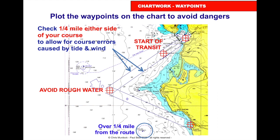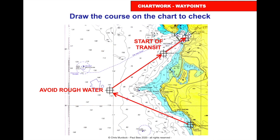The first waypoint avoids the restricted area around the buoy. The second avoids the rough water and overfalls off West Point. The next takes us to the start of the transit into Victoria, and the final one is in the harbour at Victoria — there it is, plotted on the chart.